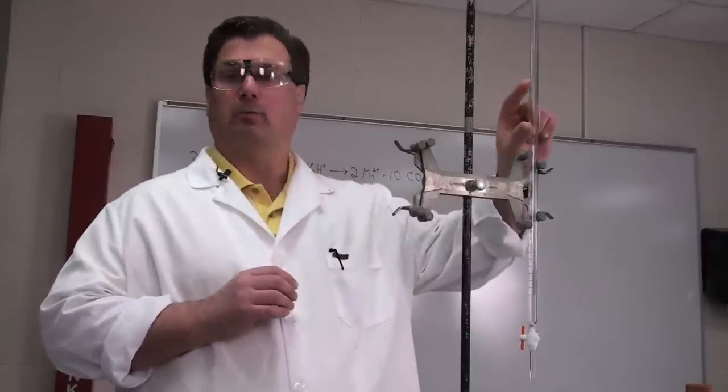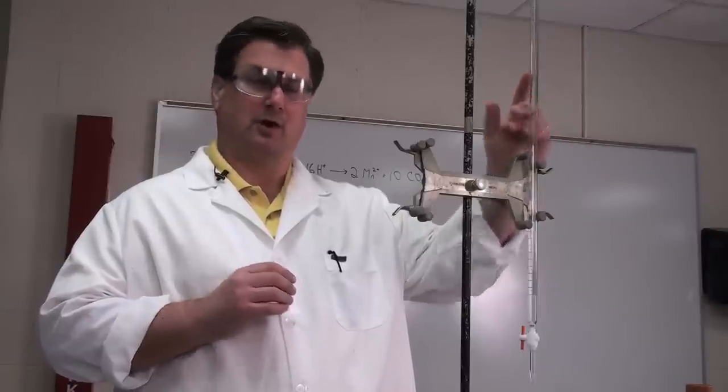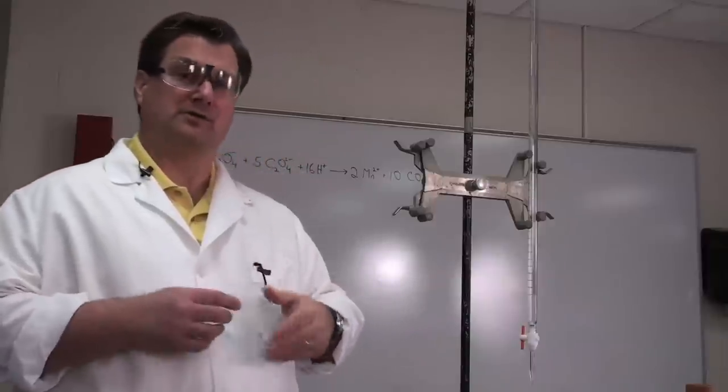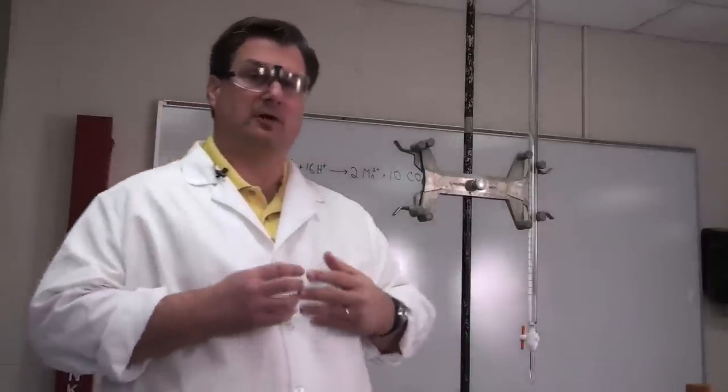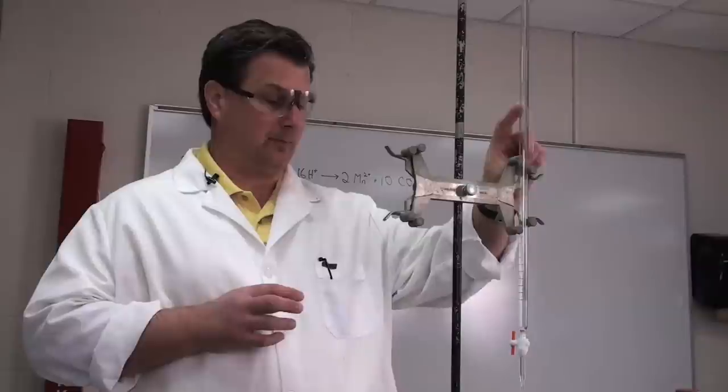In the burette we'll put an unknown permanganate solution. We know approximately what the concentration is, but our goal is to determine that concentration much more precisely. Also, because the permanganate solution is purple, we already have a built-in indicator.